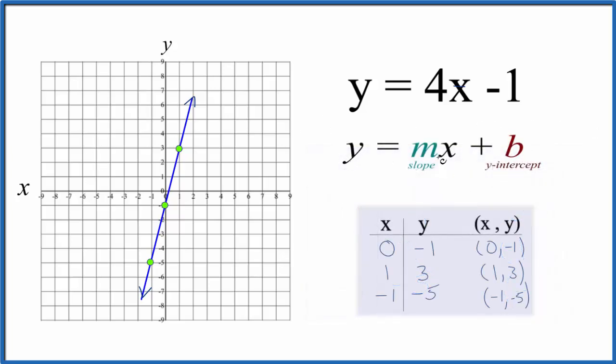So y equals mx plus b. b, that's the y-intercept. That's negative 1. So that's where the line is going to cross the y-axis, right here at negative 1. So that works.